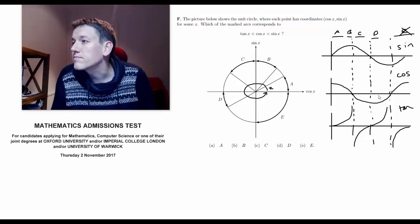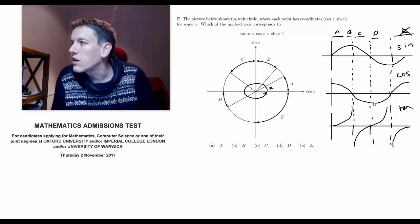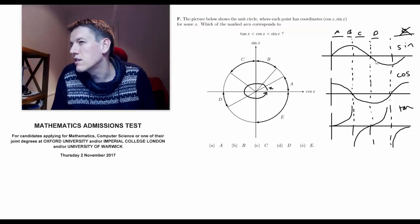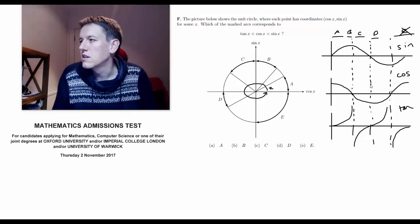In d, do we have cos θ smaller than sin θ? Yeah, well, yeah, it looks like for at least the first part of this region that would work. If I looked at a, cos θ looks like it's bigger than sin θ.